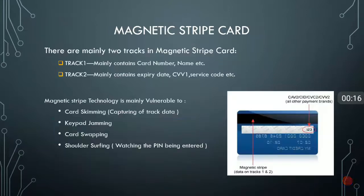I will start with the magnetic stripe card. The magnetic stripe is basically a black stripe which can be found at the backside of an ATM card, where data resides in terms of Track 1 and Track 2. Track 1 contains the card number, name of the customer, and other details.